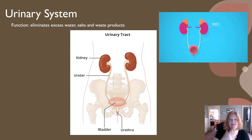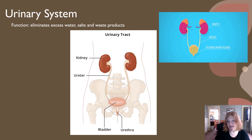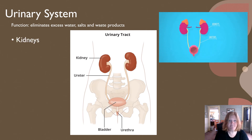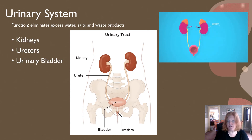Then we have the urinary system. The urinary system functions to eliminate excess water, salts, and waste products from our body. It includes the kidneys, the ureters, the urinary bladder, and the urethra.